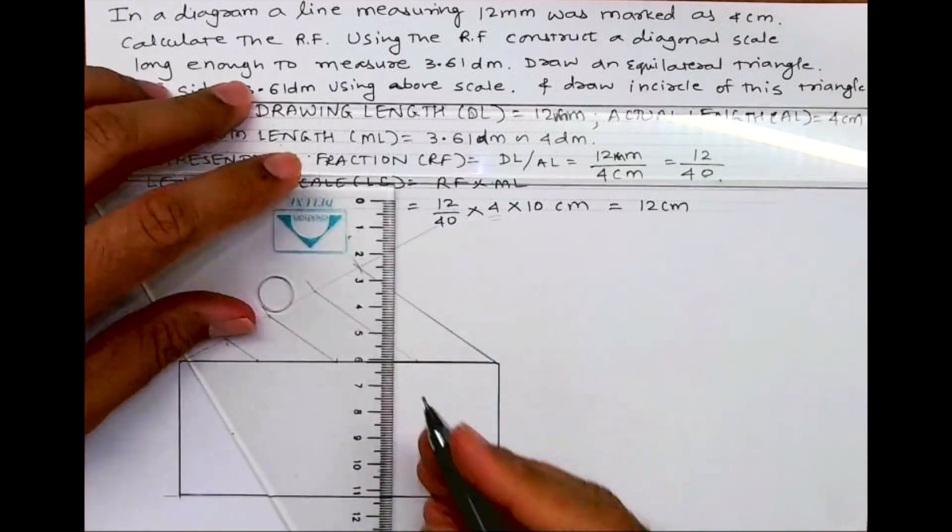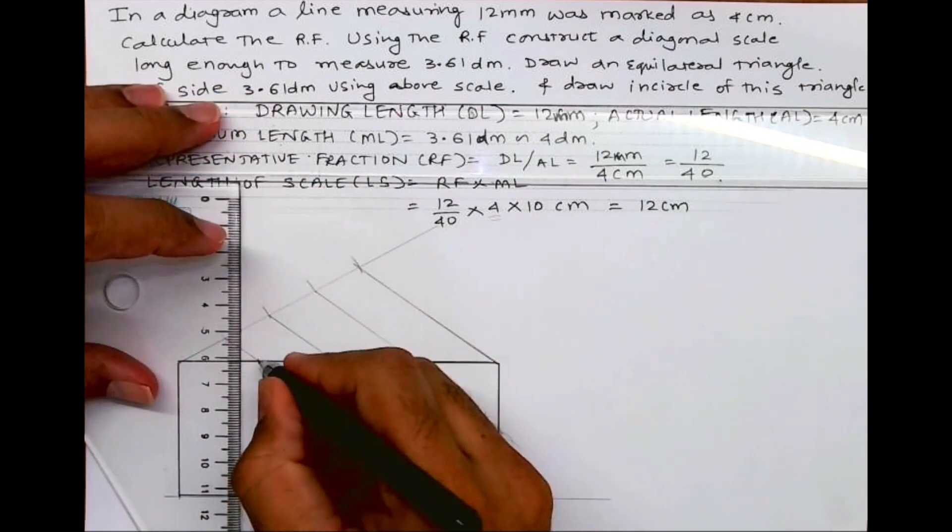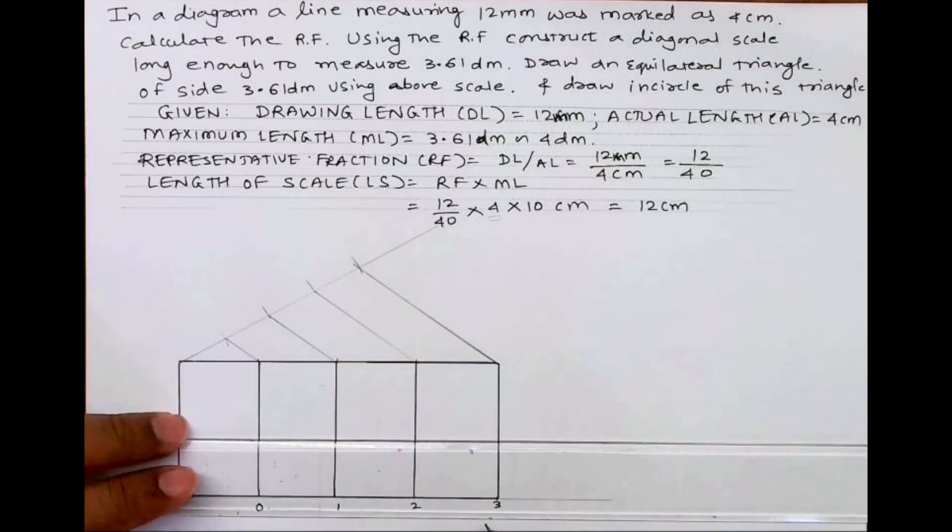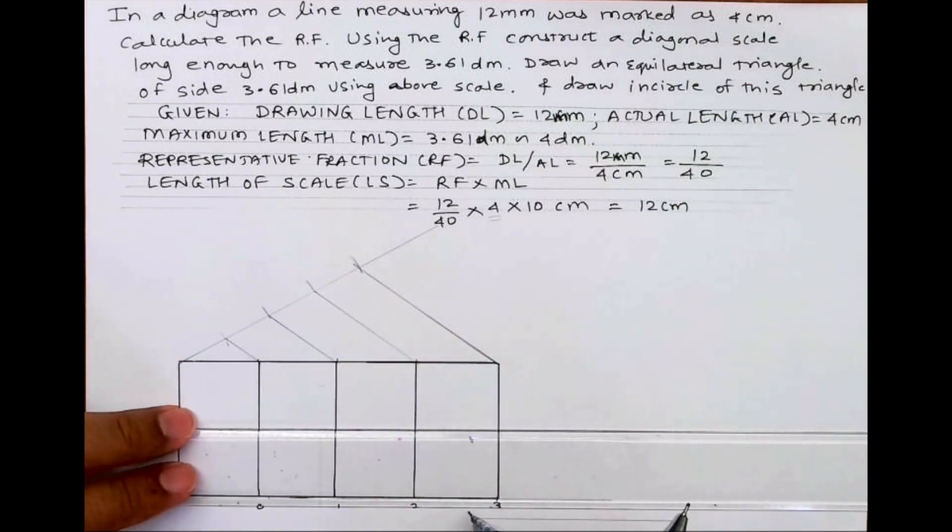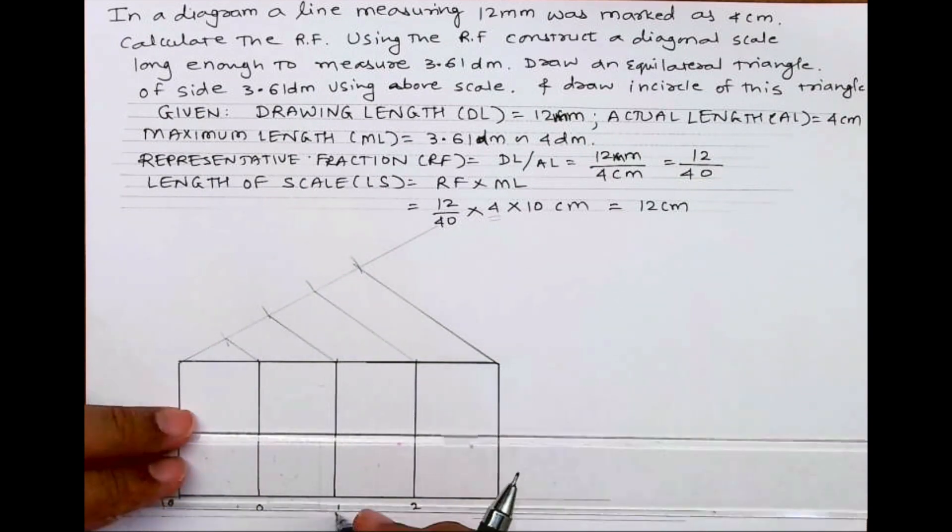Now we draw vertical lines. We have divided the 12 centimeter line into 4 parts. I'll write 1, 2, 3, 4. On the right side I will write decimeter, on the left side centimeter, and in the middle I will write RF.